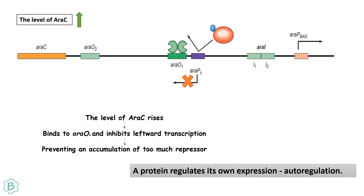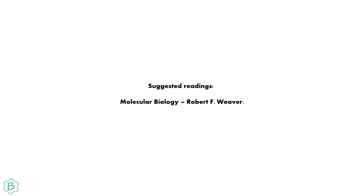When the level of AraC protein is high, it binds to the araO1 operator region, which does not allow transcription from the araC promoter for the araC gene, thus preventing accumulation of too much repressor. Hence, a protein which regulates its own expression — this process is called auto-regulation.